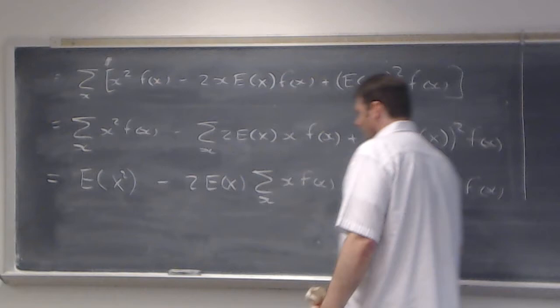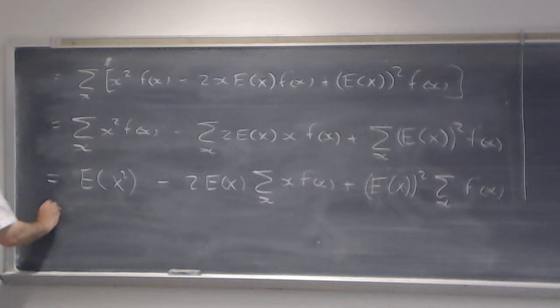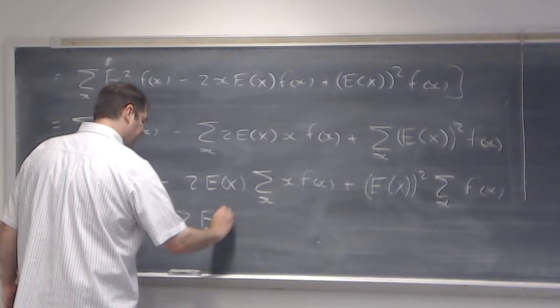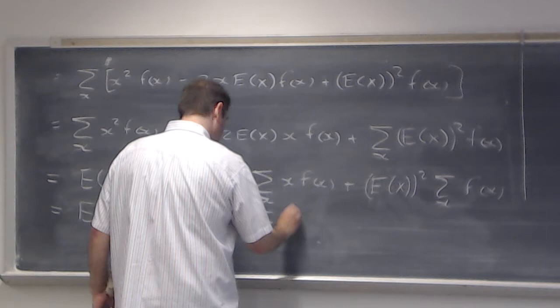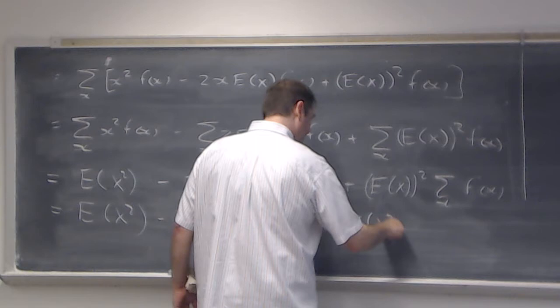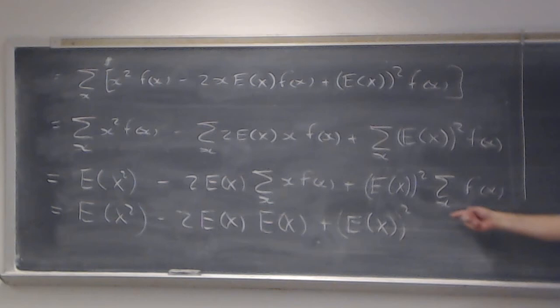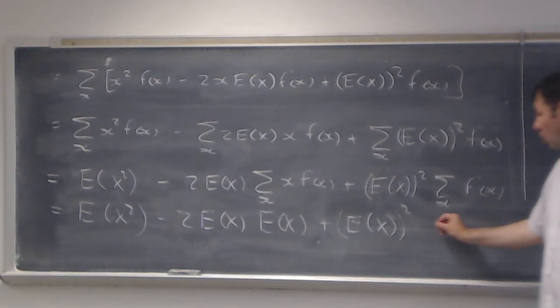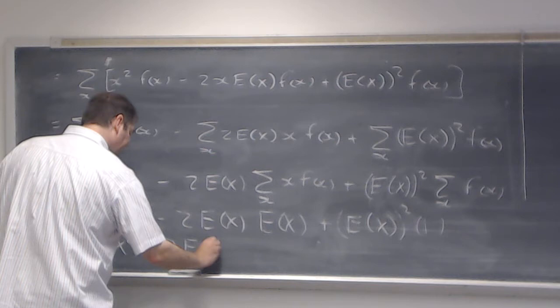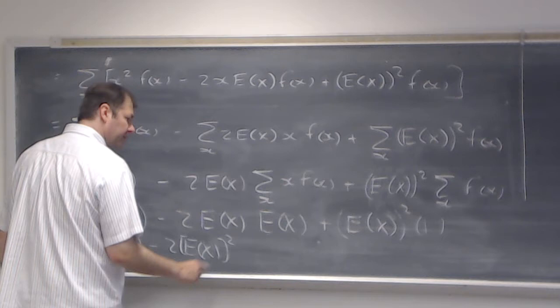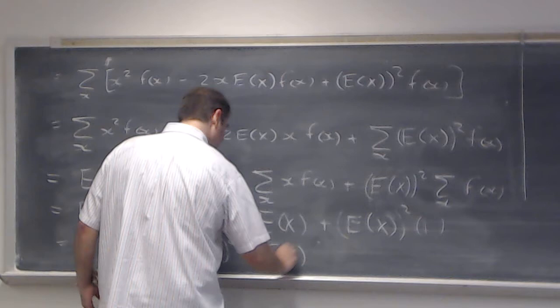This equals E[x²], minus 2 times E[x], times the sum over all x values where f(x) > 0 of x·f(x) — which by definition is E[x] — plus E[x]² times the sum over all x values of f(x). One fact about the PMF is that sum equals 1. So this is E[x²] minus 2·E[x]·E[x] plus 1·E[x]². The last two terms are like terms, giving E[x²] minus (E[x])².